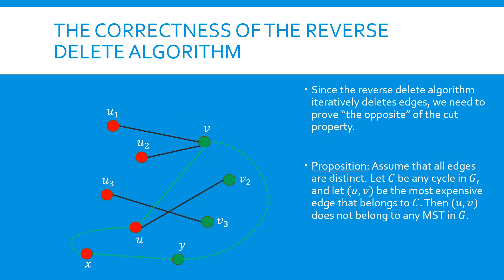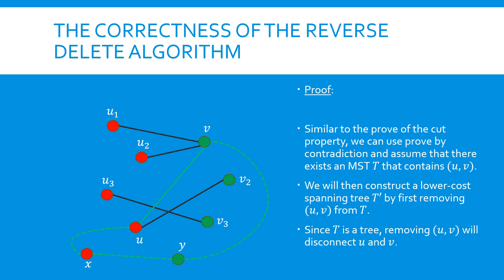Next, let's prove the correctness of the reverse-delete algorithm. Recall that this algorithm iteratively removes the heaviest edge from the graph if it does not disconnect the graph. In this case, it is challenging to directly apply the cut property to the proof. Instead, we will use the opposite of the cut property. Specifically, assume that all edges have distinct weights, and let C be a cycle in G. If UV is the most expensive edge in C, it must not belong to any MST.